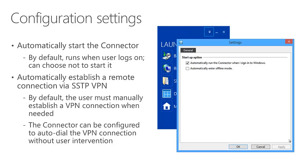The configuration settings have been greatly simplified over previous versions, primarily because those alerts are gone. Now the key settings are whether to run the Essentials Connector when you sign into Windows, and whether to automatically enter offline mode — meaning, do you want to automatically establish a VPN connection when you're trying to access resources on the Essentials server. If you check that box, after the next login the autodial VPN is set up, making connectivity seamless whether you're local or working remotely.